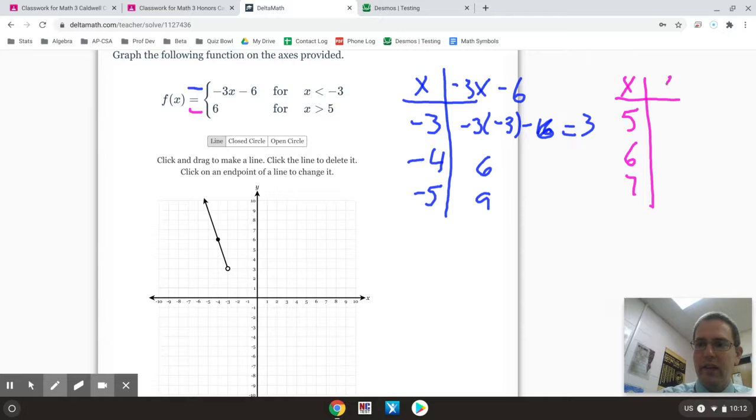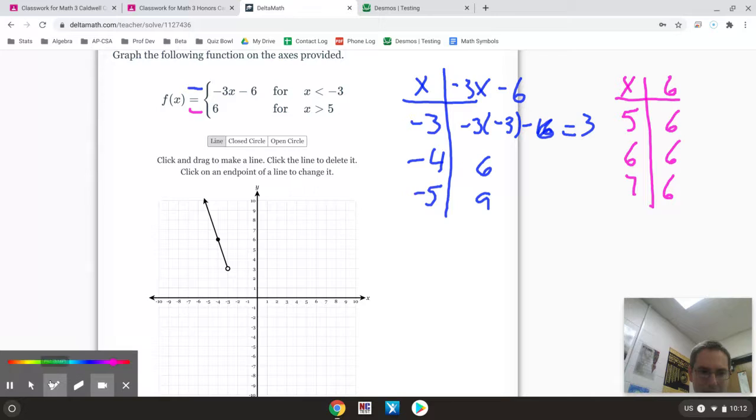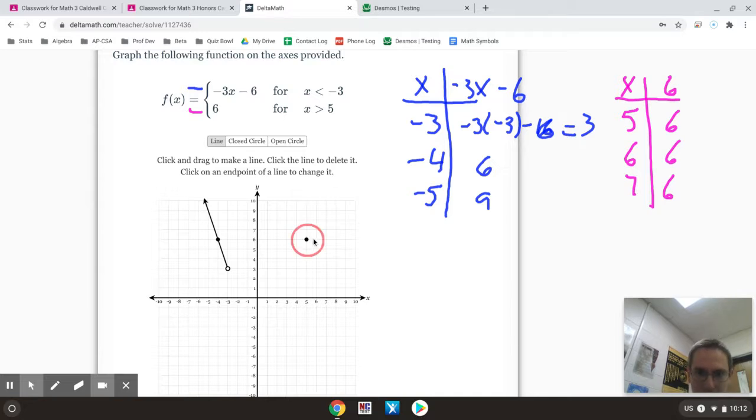My rule is just a 6. So since there's nowhere to put an x, it's just always 6. Then what I can do is I can graph the point 5, 6, make sure I'm turned on line there. And I'm going to start at positive 5, 6, over 5, up 6. Click and drag to make my line. I can go to 6, 6. I can go to 7, 6. You notice it's the same line regardless.